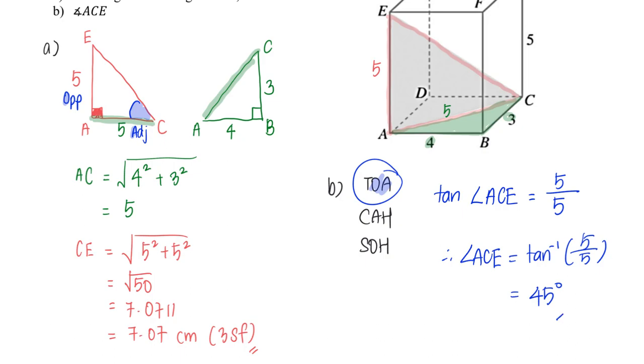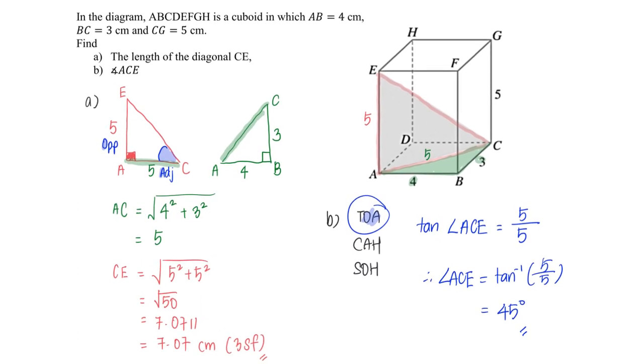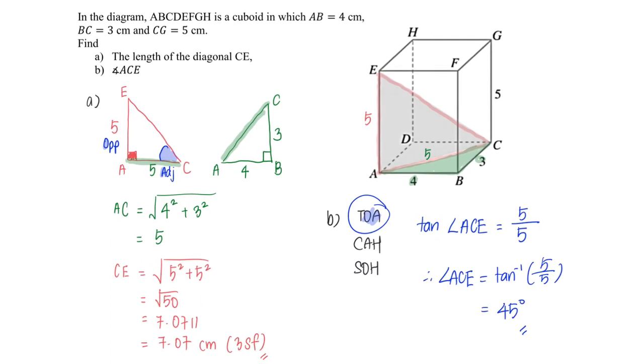Therefore, angle ACE equals tangent inverse of 5 over 5, which equals 45 degrees. With that, we've come to the end of this example. If you liked this video, give it a thumbs up and subscribe to my channel. Let's move on to explore more mathematics problems.